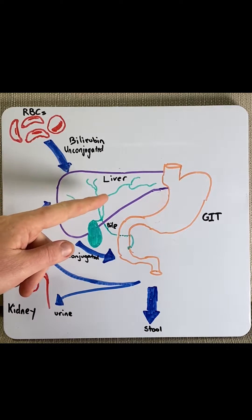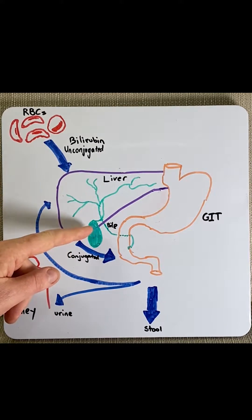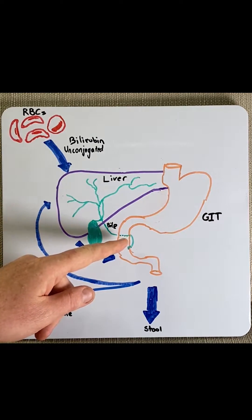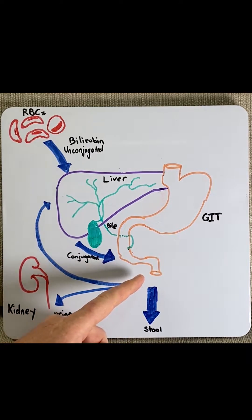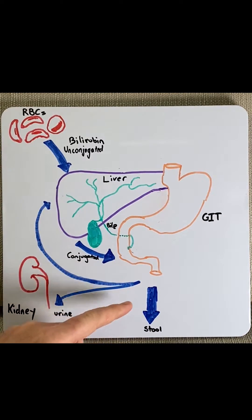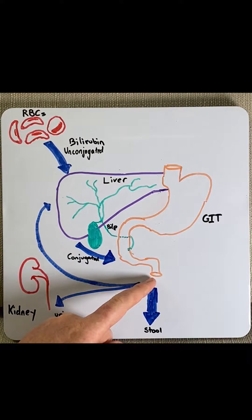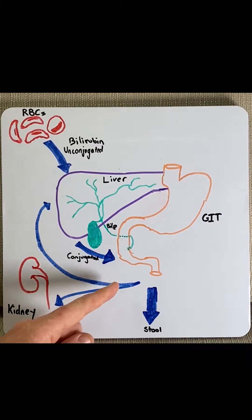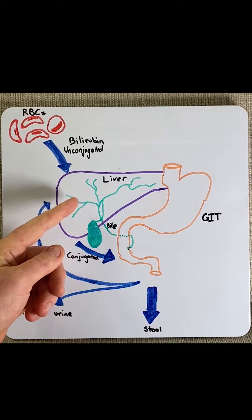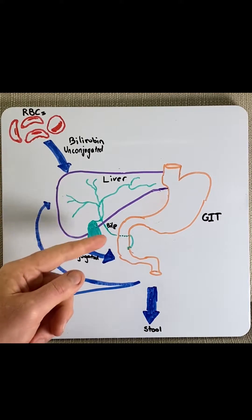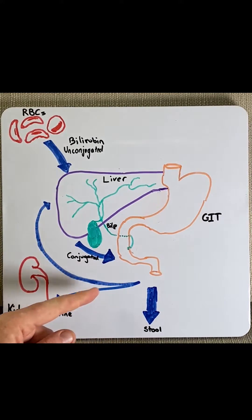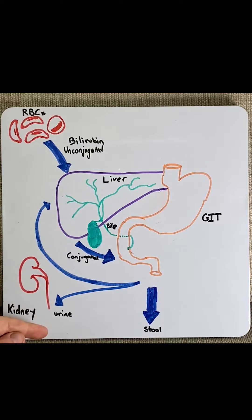Here the conjugated bilirubin is added into the bile, which is excreted in the gut. Here the majority of this conjugated bilirubin is excreted in the stool, but in the gut some bacteria will oxidize the conjugated bilirubin, which then makes it unconjugated and reabsorbed back into the blood. Some of this will be taken back in a loop to the liver for further conjugation again, whereas some will be taken to the kidney for excretion.